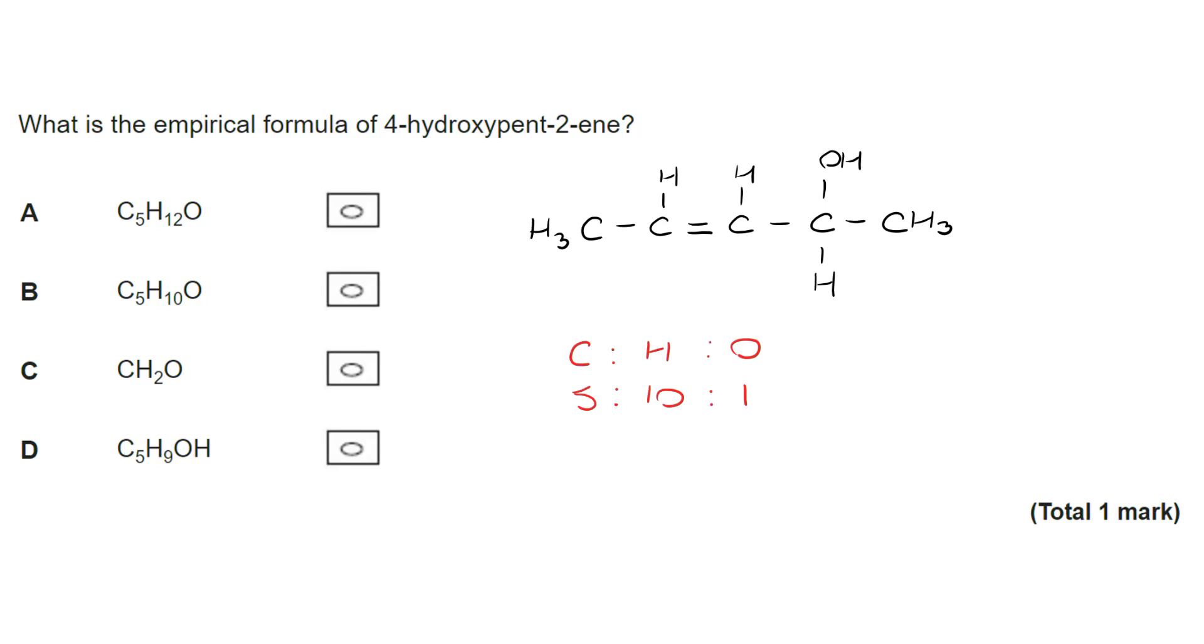I can then fill in the remainder of the hydrogens. Now, from there, I can work out my ratio C to H to O, and I see that I've got five to ten to one. Now, that's my molecular formula, but I can't simplify that. I can't divide it down because I can't take O1 any smaller. So the correct answer is B.